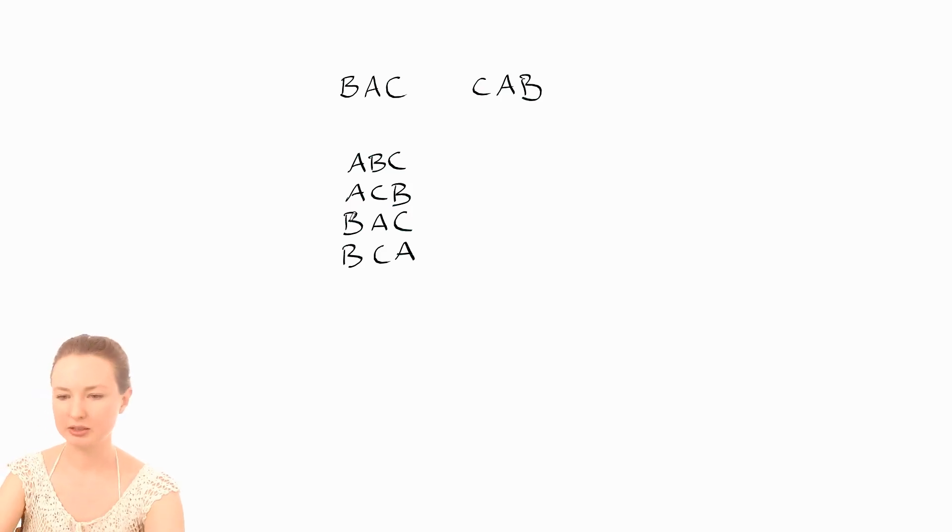And then we can do C at the start. So we've got C, A, B and C, B, A, and then that's it. That's all of them - there's six. We know that's all of them because we wrote them out in order. We know there wasn't any that we missed along the way.